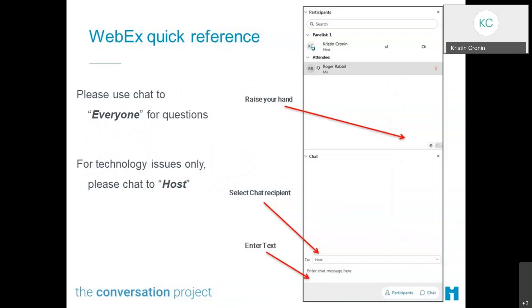If you have a question or comment at any point during the call, please feel free to type into the chat box by selecting the chat bubble at the bottom right of your screen. Once you click this, the chat box will pop up. To send a public message, write your message and send it to everyone. You can also use the raise your hand icon on the right side of the chat and we'll call on you to voice your question.